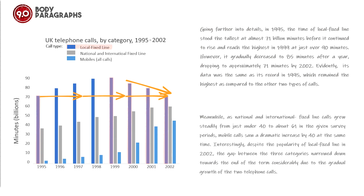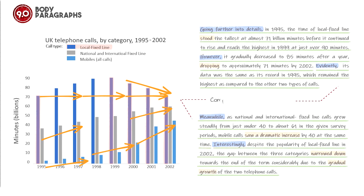'Meanwhile, national and international fixed line calls grew steadily from just under 40 to about 61 billion minutes in the given survey period, while mobile calls saw a dramatic increase of 40 billion minutes at the same time. Interestingly, despite the popularity of local fixed line in 2002, the gap between the three categories narrowed down towards the end of the term considerably, due to the gradual growth of the two telephone calls.' This report gets 9.0 because it uses cohesive devices appropriately, the words used are advanced, and all the sentences are different types of complex sentence forms.